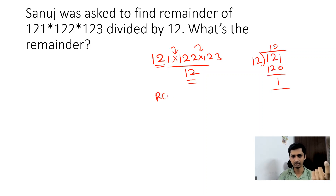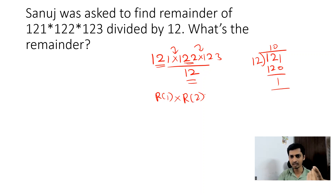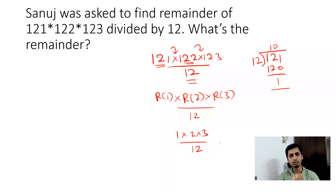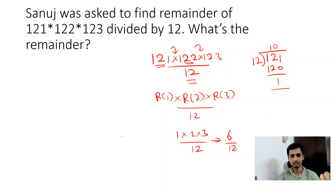For 122 ÷ 12, the remainder is 2. For 123 ÷ 12, the remainder is 3. So now we have 1 × 2 × 3 ÷ 12, which gives us 6. Since 6 is less than 12, you can't divide further, so the remainder for this question is 6.